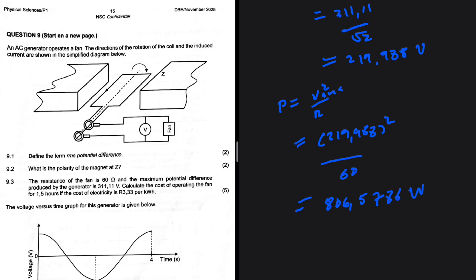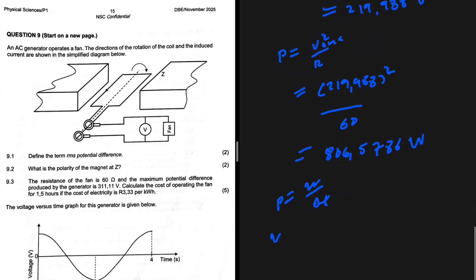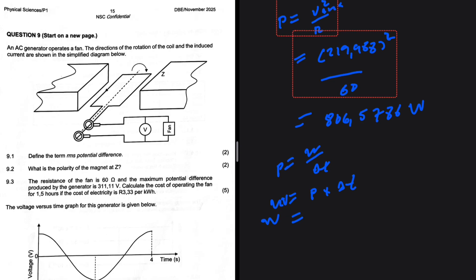Now we know that power equals work divided by time. We want to find the work, so power multiplied by delta t is going to be our energy.